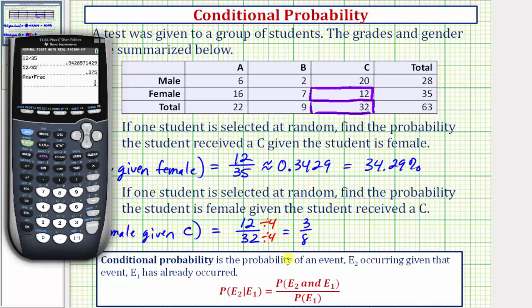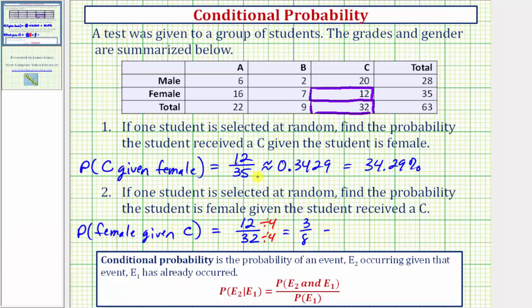Notice how as a decimal we have a terminating decimal of 0.375, which would be equal to 37.5%. Notice in this case, the fraction, decimal, and percent are all exact probabilities because we didn't have to do any rounding.